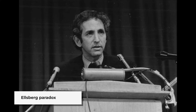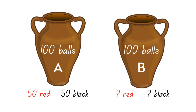American economist Daniel Ellsberg's research in the 1960s played an important role in providing evidence of ambiguity aversion. In one of his experiments, there are two urns with 100 balls each. Urn A contains 50 red balls and 50 black balls. Urn B also contains both red and black balls, but the ratio of red balls to black balls is unknown.